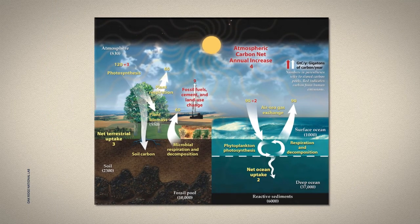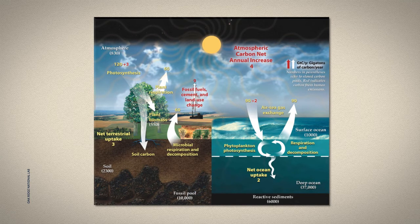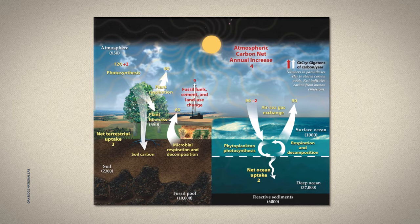To orient you, the numbers in parentheses indicate the number of gigatons of carbon in a particular place. A gigaton is a billion tons. So for example, the atmosphere has about 830 billion tons of carbon in it. Looking at the opposite corner, the deep ocean has about 37,000 billion tons of carbon in it — that's a lot more than the atmosphere. All the plants on land have a mere 550 tons. But don't worry too much about the exact numbers; you'll find slightly different numbers on different versions of the carbon cycle, but the comparisons should be pretty similar.